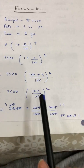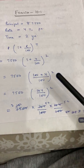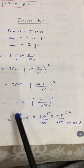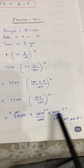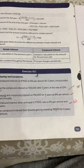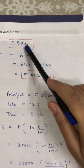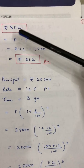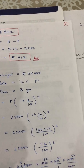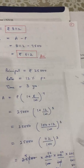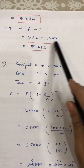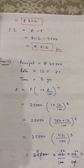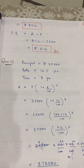Opening the bracket, we multiply 104/100 twice: A = 7500 × (104/100) × (104/100). After cancelling on the 5-table and then the 2-table, the answer is ₹8,112. That is the amount. Now compound interest = Amount − Principal = 8,112 − 7,500. So the compound interest comes out to ₹612.